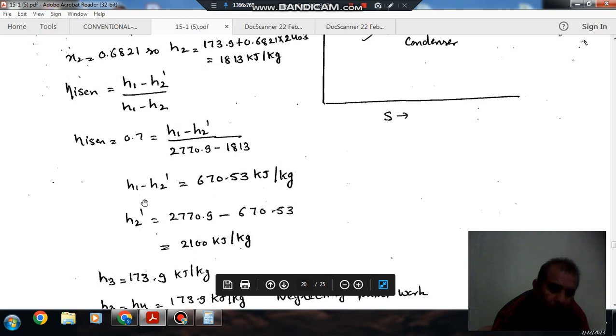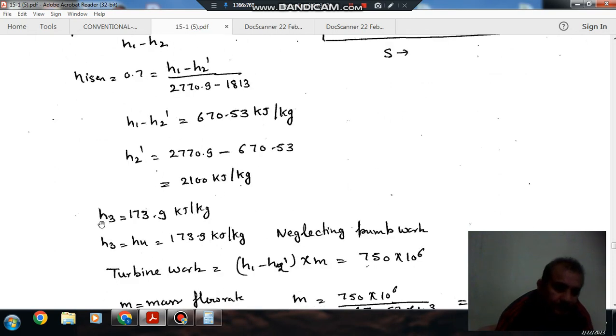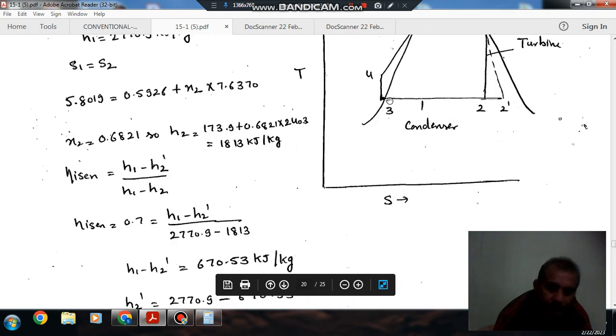H2 comes as 2100 kilojoules per kilogram, and h1 minus h2 comes as 670.53 kilojoules per kilogram. H4 is 173.9 kilojoules per kilogram.